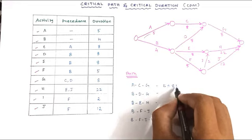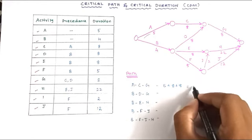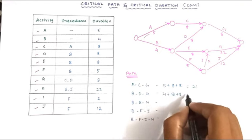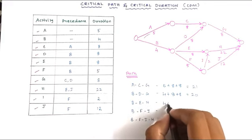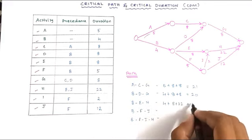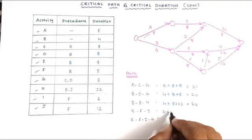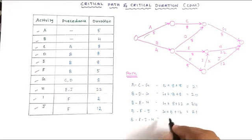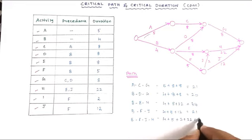Path A–C–G: 5 + 8 + 8 = 21. Path B–D–G: 4 + 8 + 8 = 20. Path B–E–H: 4 + 8 + 22 = 34. Path B–F–J: 4 + 5 + 12 = 21. Path B–F–I–H: 4 + 5 + 2 + 22 = 33.